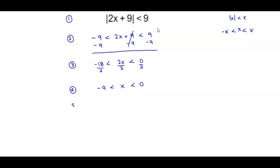So what does this look like when we graph it? Well, when we graph this, we have the following. We have negative 9, and then we have 0. And it's saying that x is in between these two numbers.